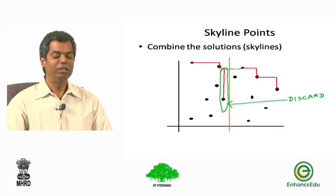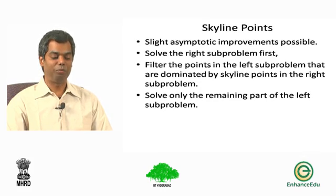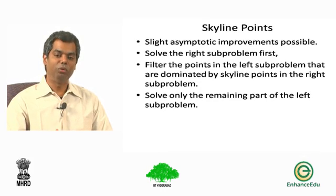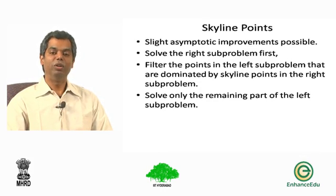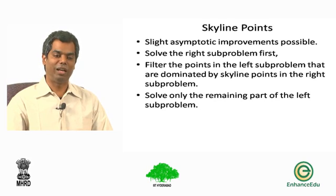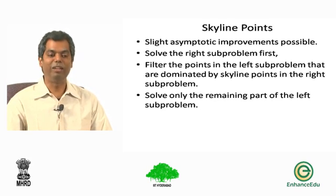In fact, you will notice that while this algorithm was very straightforward when you divide and conquer, there are some small improvements possible still. For example, as you notice in the previous picture, you are computing two skylines and actually discarding points from one of these skylines.